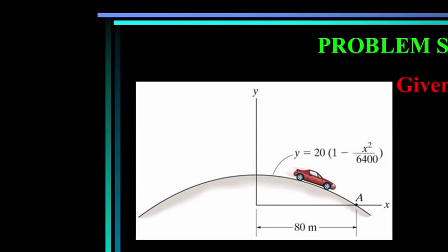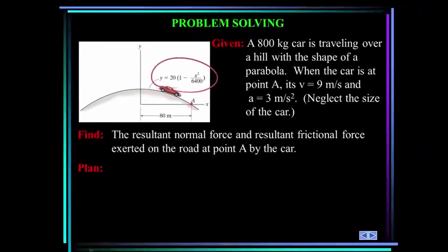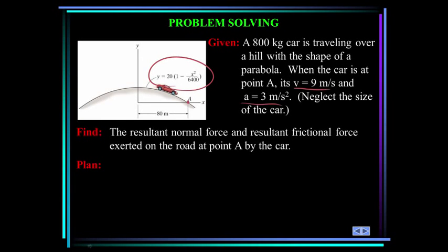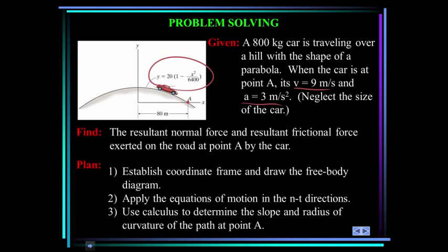Let's solve another problem. An 800 kilogram car is traveling over a hill shaped like a parabola given by the equation y = 20(1 - x²/6400). When the car is at point A, its velocity is 9 meters per second and its acceleration is 3 meters per second squared. We want to find the normal force and the resultant frictional force exerted on the road at point A by the car. The plan is to establish a coordinate frame, draw the free body diagram, apply the equations of motion in the n-t directions, and use calculus to determine the slope and radius of curvature of the path at point A.